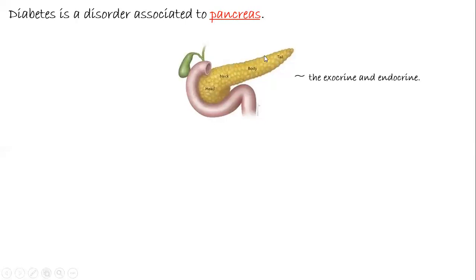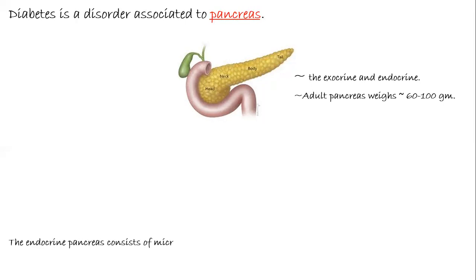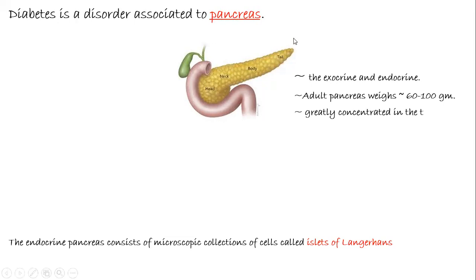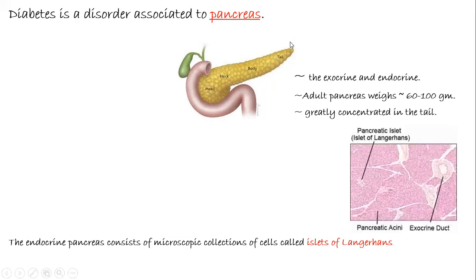The structure is divided into four parts: the head portion, the neck, the body, and the tail. The adult pancreas weighs almost 60 to 100 grams. The endocrine pancreas consists of microscopic collections of cells called the islets of Langerhans, which are responsible for the synthesis and release of insulin. These islets are greatly concentrated in the tail portion of the pancreas.